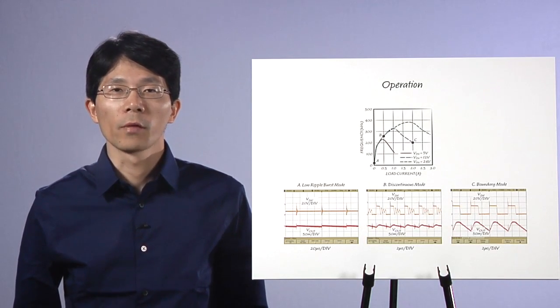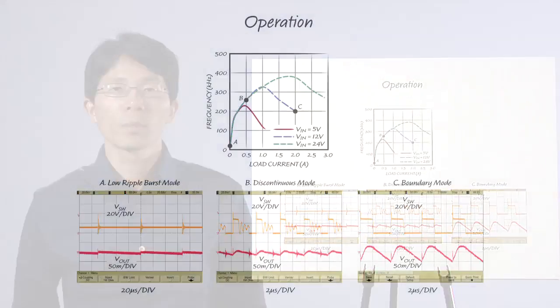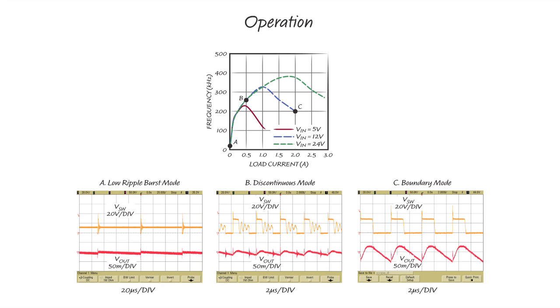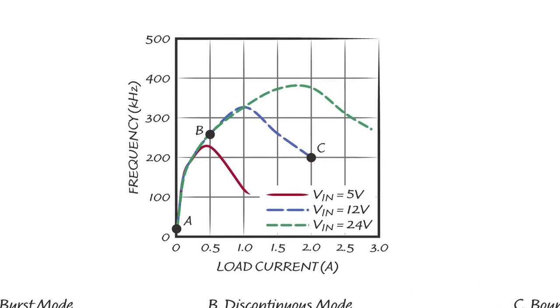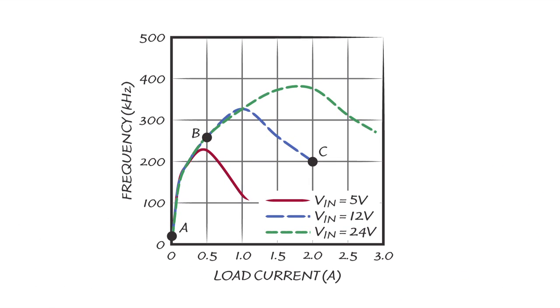Now let's use a 5-volt application with LT8302 to demonstrate the operation and performance of our Low IQ No Opto Flyback ICs. The top graph shows the switching frequency versus load current at three different input levels.